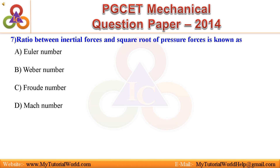Question 7: Ratio between inertial forces and square root of pressure forces is known as — a. Euler number, b. Weber number, c. Froude number, d. Mach number. Answer is Euler number.